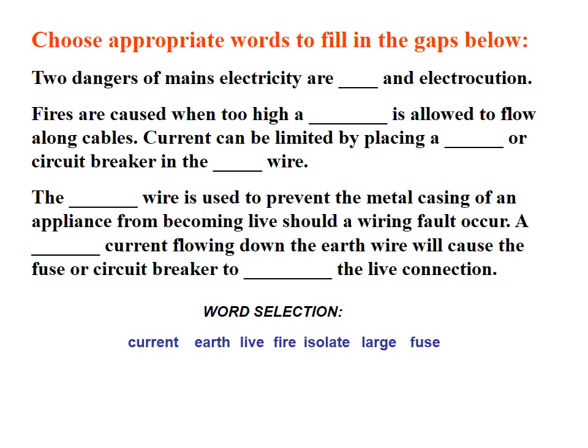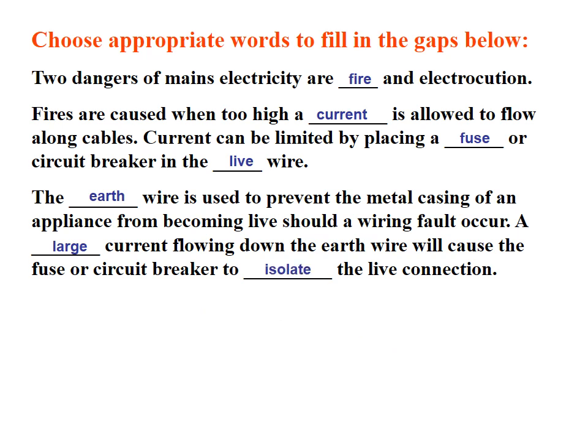Two dangers of mains electricity are fire and electrocution. Fires can be caused when too high a current flows along cables, and current can be limited by placing a fuse or circuit breaker in the live wire. The earth wire prevents the metal casing of an appliance from becoming live should a wiring fault occur, and a large current flowing down the earth wire will cause the fuse or circuit breaker to isolate the live connection.